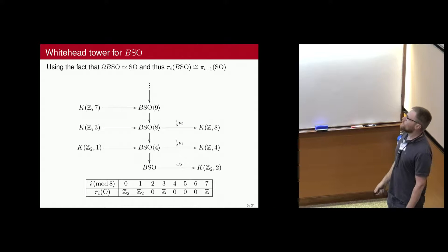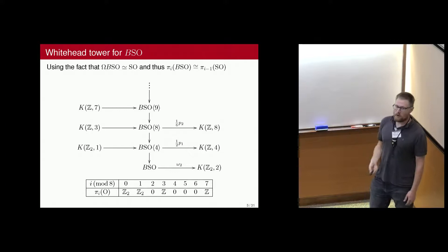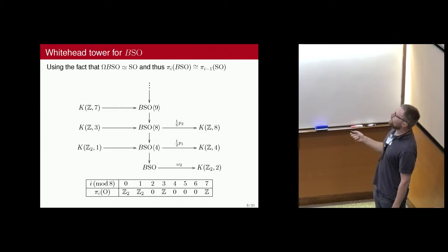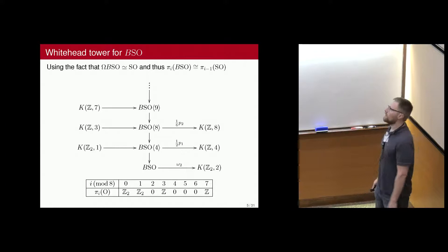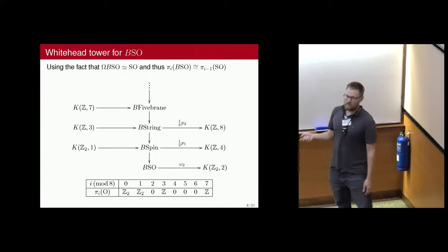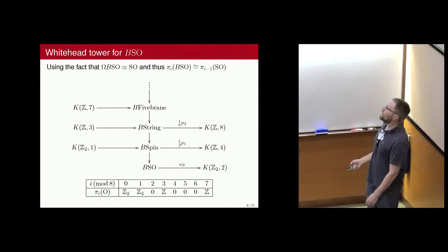We care about the Whitehead tower sitting over BSO — the classifying space for SO. Bott periodicity tells us what the homotopy groups are. Since SO is homotopically the looping of the classifying space, we know the homotopy groups for BSO. The second Stiefel-Whitney class is the obstruction to lift to BSO[4]. Then you have a fraction of the first Pontryagin class for the next step, and a fraction of the second Pontryagin class after that. We call these BSO, BSpin, BString, B5Brane — referring to these higher structures. BString is really well known; B5Brane maybe not as much, but we can continue this tower onwards.